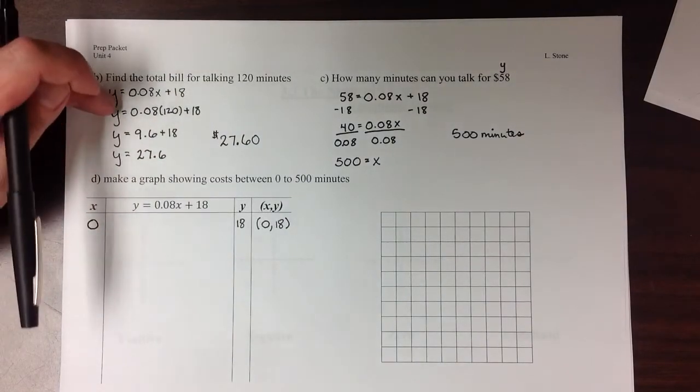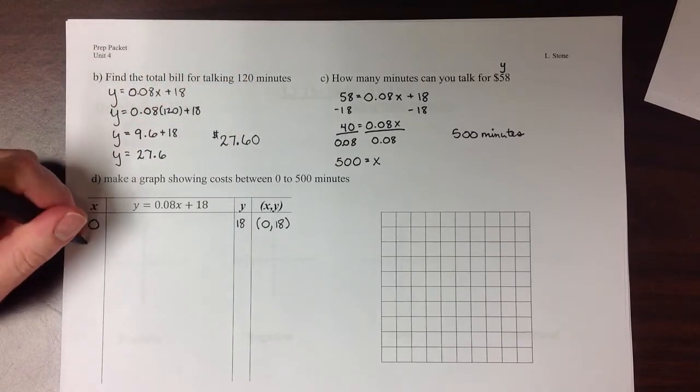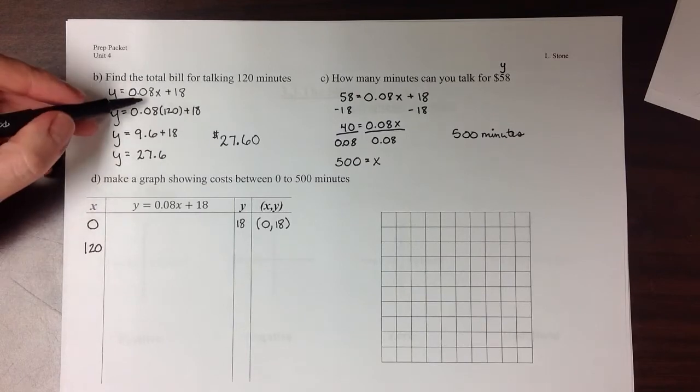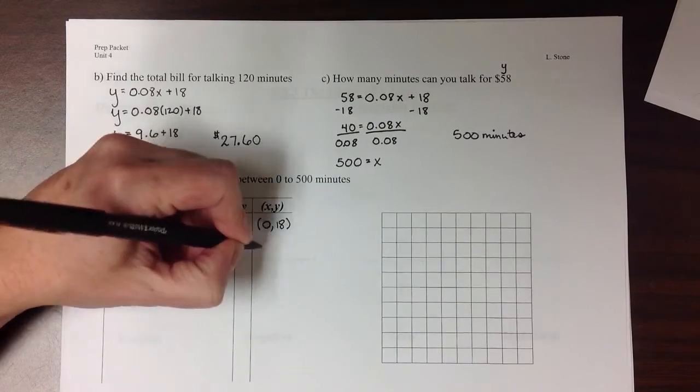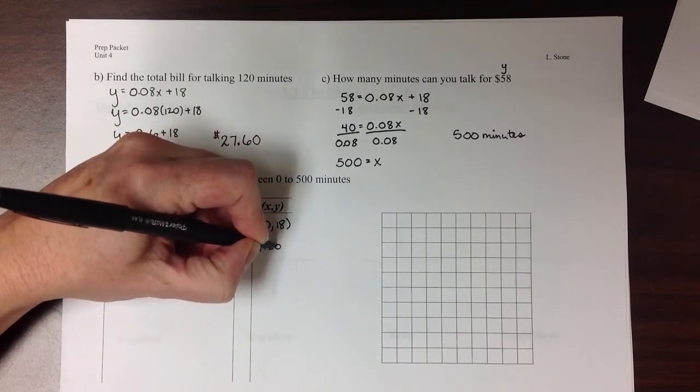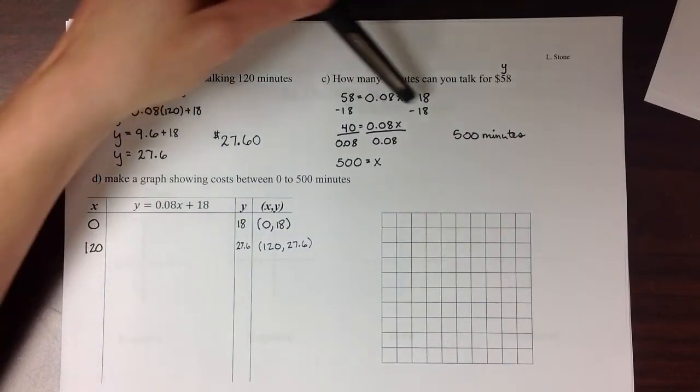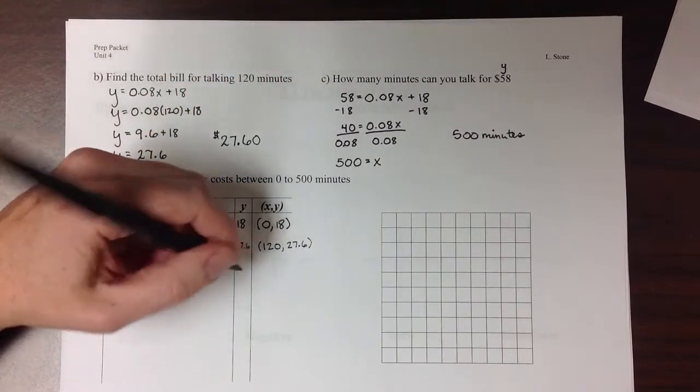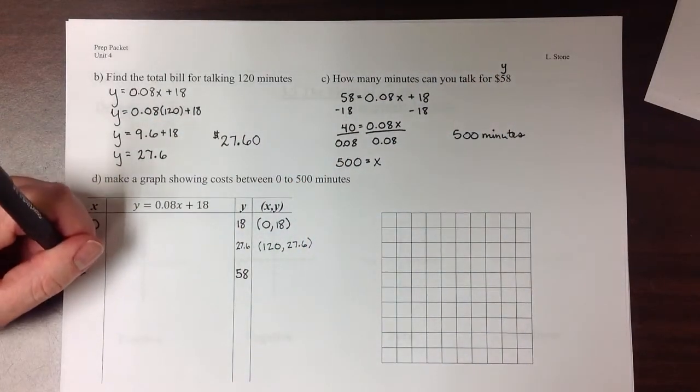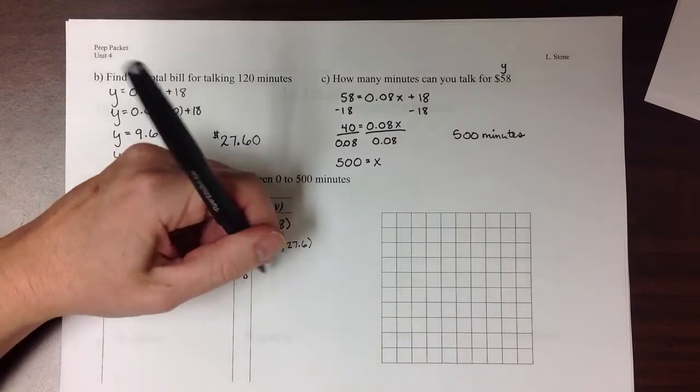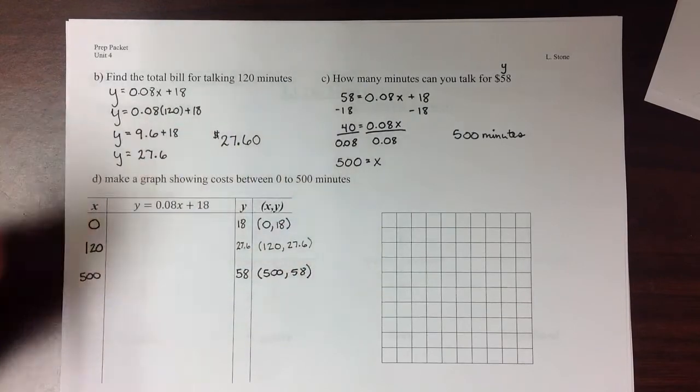Then up here we tried a solution where we let x equal 120. And when we had x equal to 120, we found that y is equal to 27.6. So that gives us the point (120, 27.6). And then we did it one more time here, where we started with a y value. We let y equal 58. And when we solved for that, we found that x equals 500. So our third point on our graph is (500, 58).